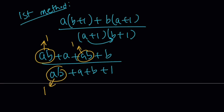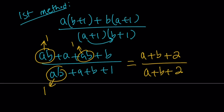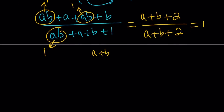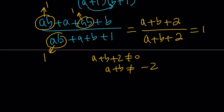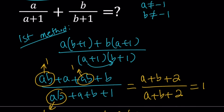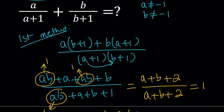So in the numerator we have a plus b plus 1 plus 1, which is a plus b plus 2. In the denominator we have ab — which is 1 — plus a plus b plus 1, giving us a plus b plus 2. The expression equals 1! That's not a coincidence. This holds as long as a plus b plus 2 does not equal 0, meaning a plus b does not equal negative 2. We need to exclude pairs like a equals negative 3 and b equals 1 (or vice versa) where the sum would be negative 2.